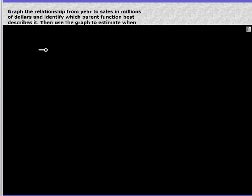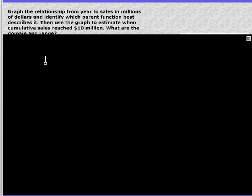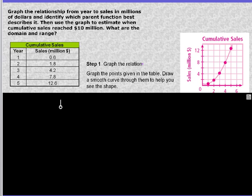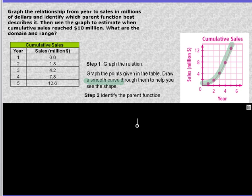Graph the relationship from year to sales in millions of dollars and identify which parent function describes it, then use the graph to estimate when cumulative sales reach $10 million. What are the domain and range? Here's the data. We're going to graph it. We can see, knowing what the parent function is, which it pretty much looks like it's a parabola, we can plot a probable continuous line graph in between all those points to give it a smooth curve. Parent function looks like quadratic.